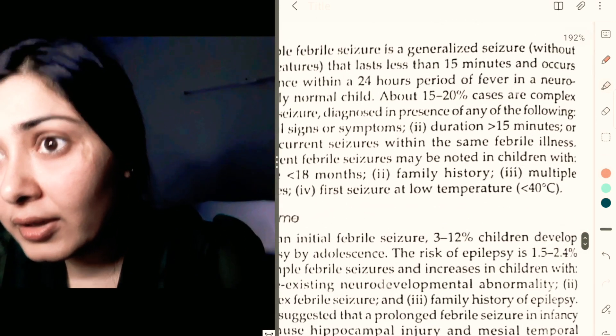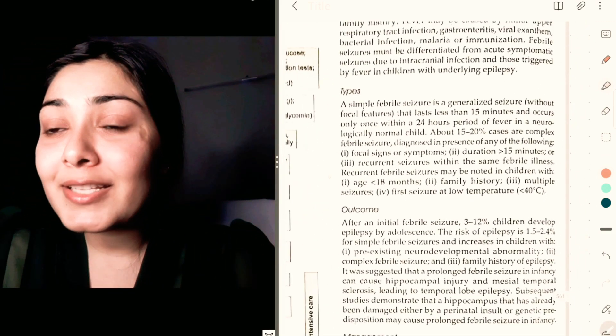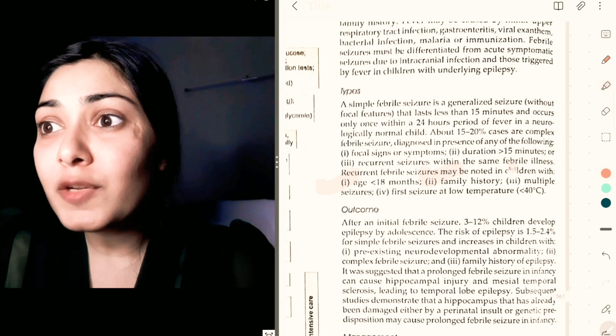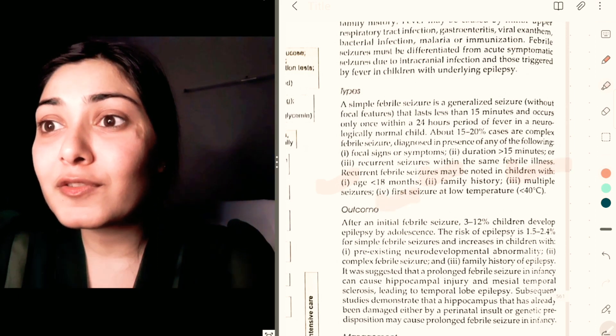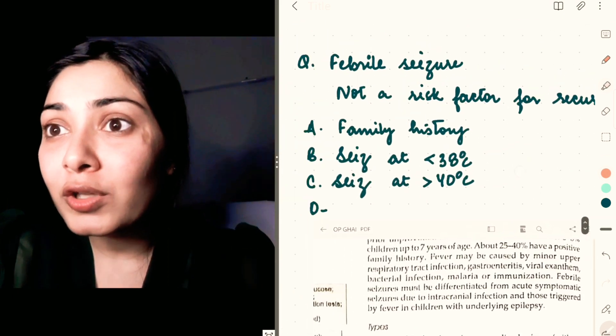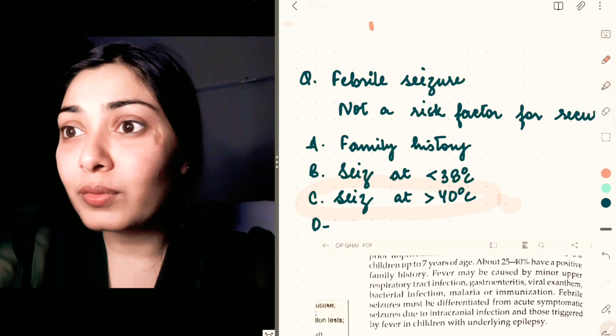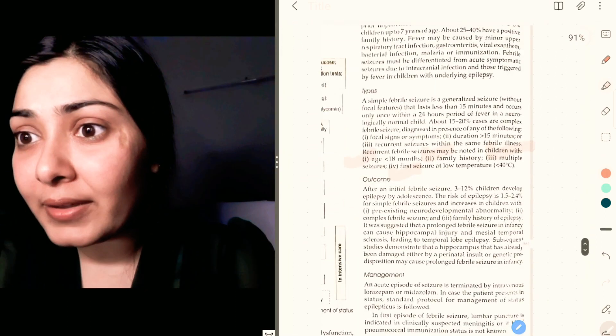You can easily see here all the risk factors that are mentioned in Ghai: age, family history, multiple seizures, and first seizure at a lower temperature. So these are all risk factors. Higher temperature is not a risk factor, so this is the correct option here.